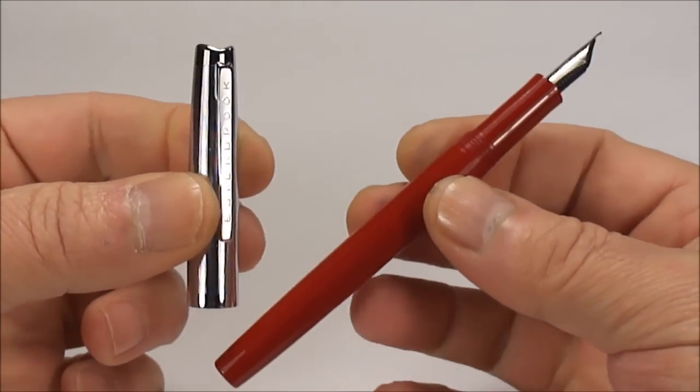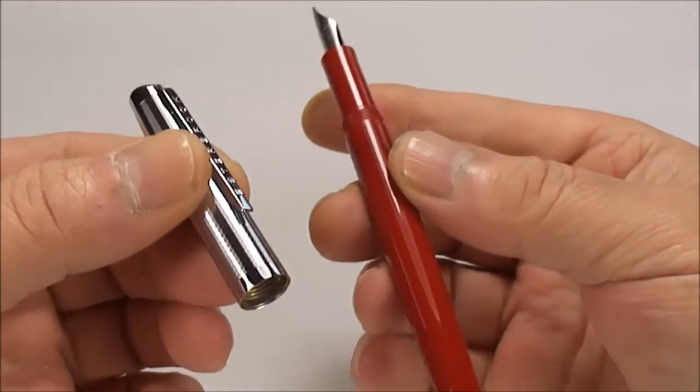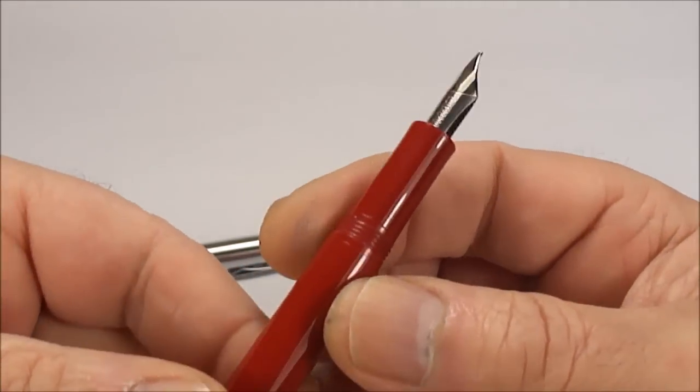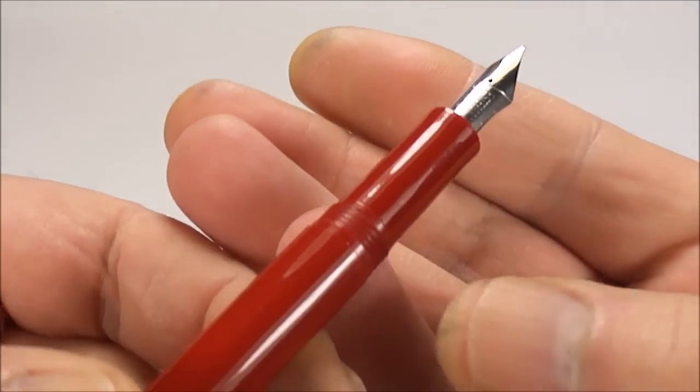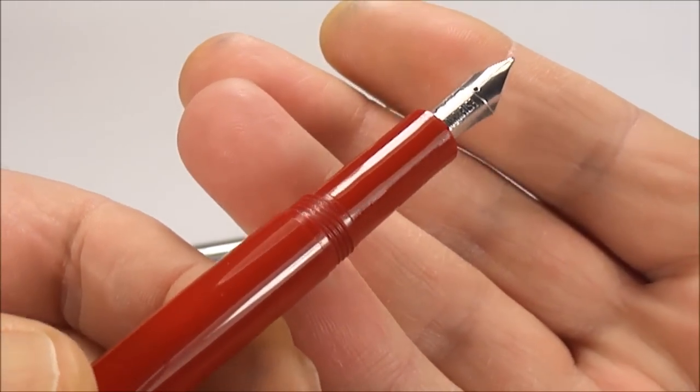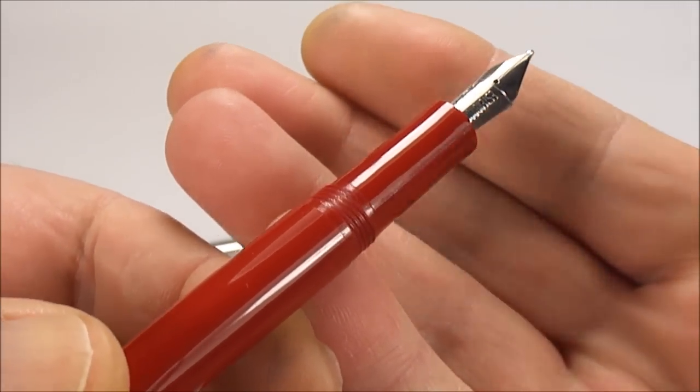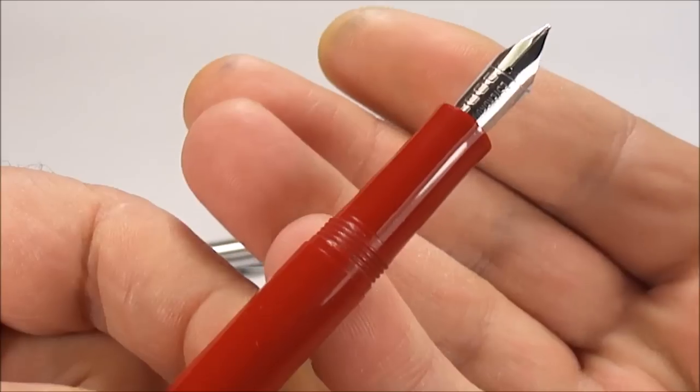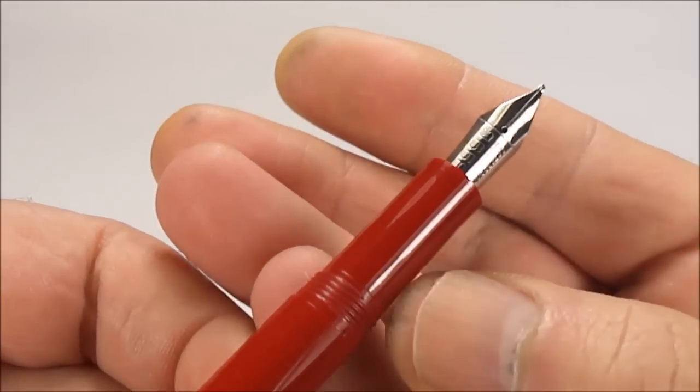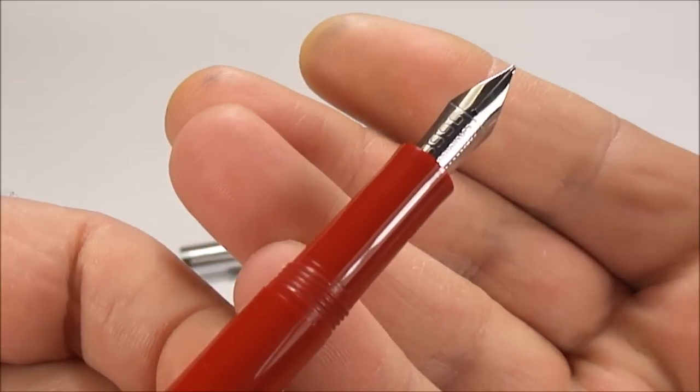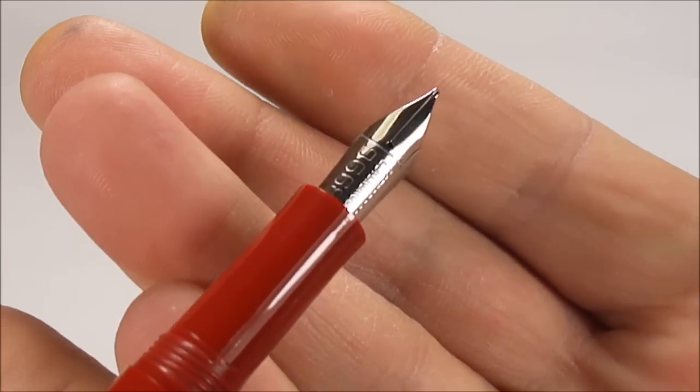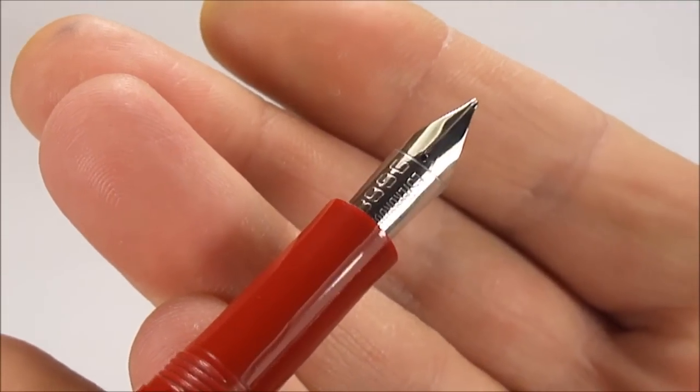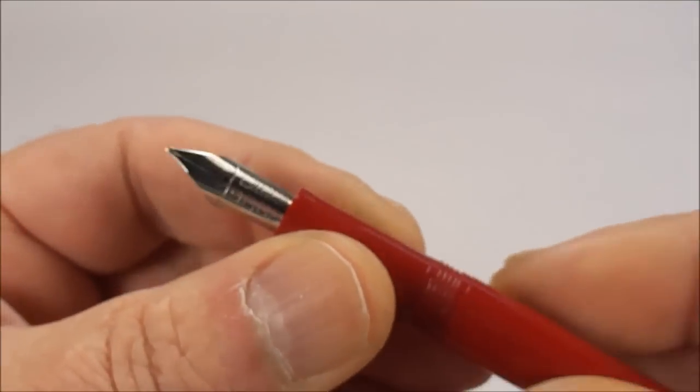Now the cap on these pens simply unscrews. Let's show you the pen in different angles. As I say, nice and clean. Let's show you the section first of all. You'll see the thread there is a continuation of the barrel. The thread is in plastic, the section slightly tapered towards the nib.